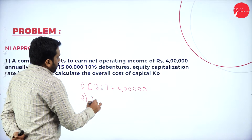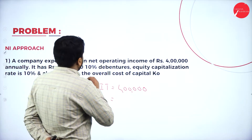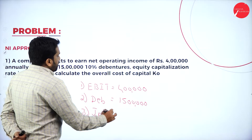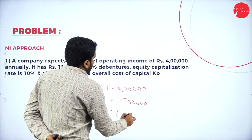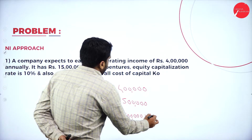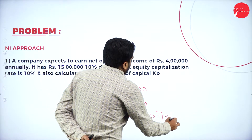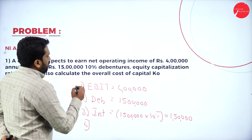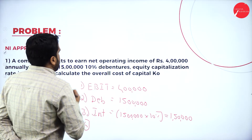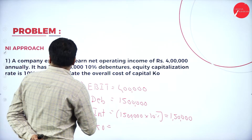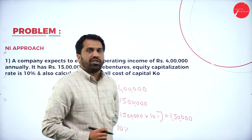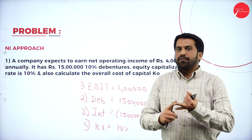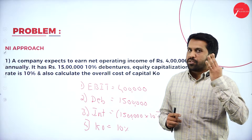Debentures we have 15 lakh. Interest is 15 lakh multiplied by 10%, so it is 1 lakh 50,000. The equity capitalization rate KE is 10% — note this is KE, not KO, since KO is what we are supposed to find out. These are the given information. We are supposed to find out: value of equity, value of the firm, and cost of equity.